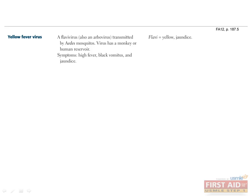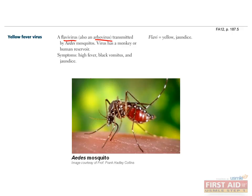Yellow fever virus is a flavivirus and an arbovirus. Arboviruses are those viruses transmitted by arthropods; in the case of yellow fever, the arthropod is the Aedes mosquito. The RNA virus chart identifies other arboviruses by an asterisk symbol. Yellow fever is characterized by chills, fever, black vomit, and headaches. When the liver is involved, people develop jaundice, which can help you recall why it's named yellow fever.